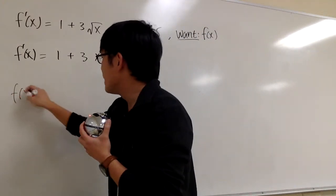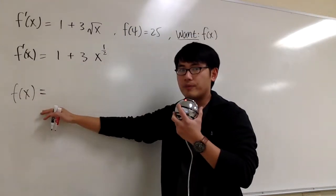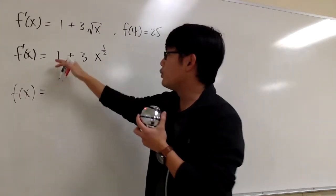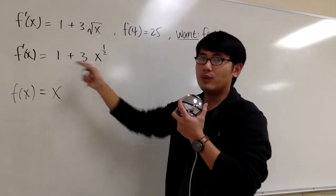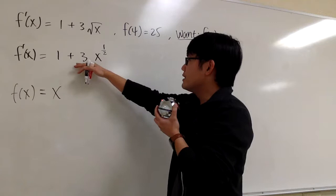We are going to think this backwards to get the original. Derivative of what will give you 1? And the answer for that will be x. Derivative of x will give you 1. And now, for this part,